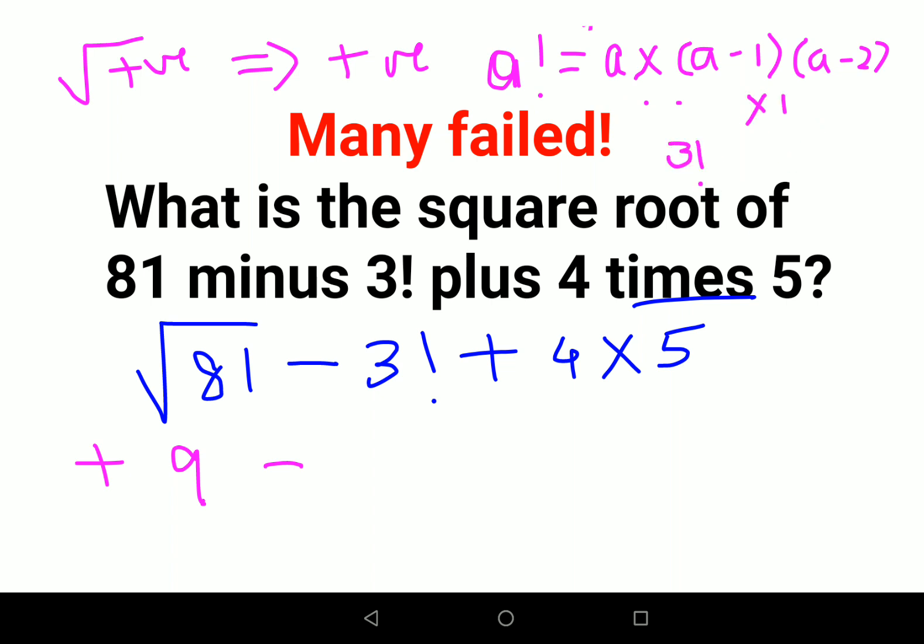So 3 factorial will be what? 3. What is the next number in decreasing order? That is 2 into 1. So 3 into 2 into 1 is 6.